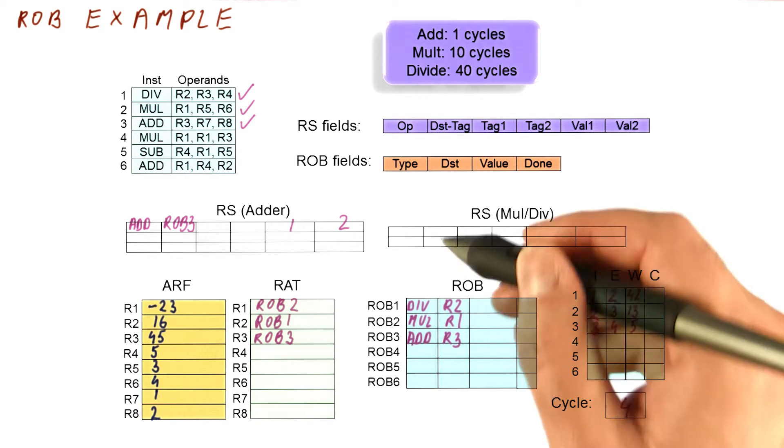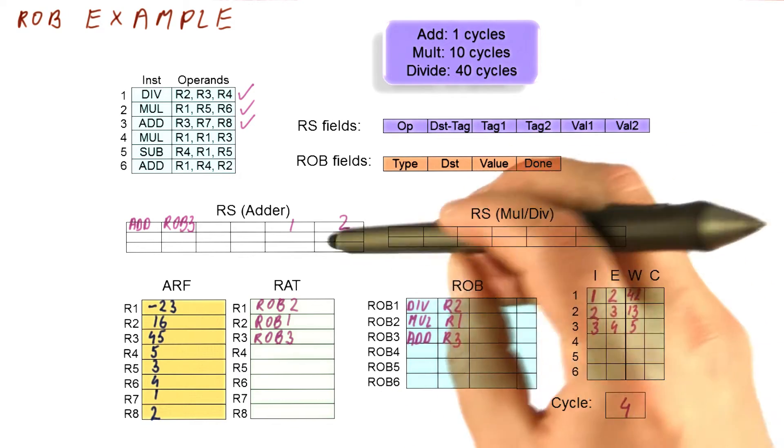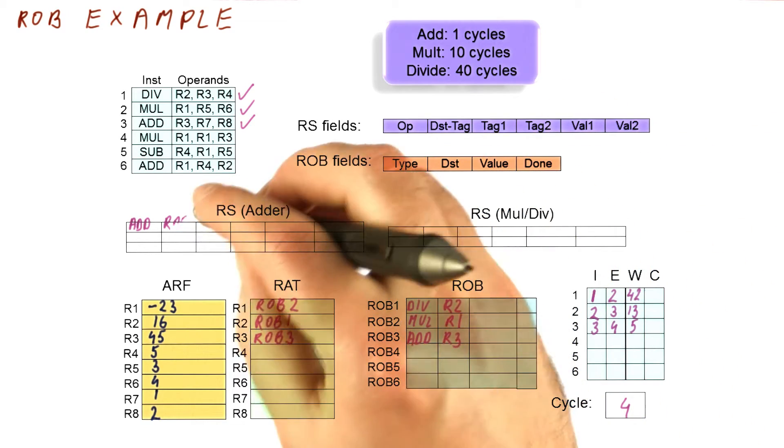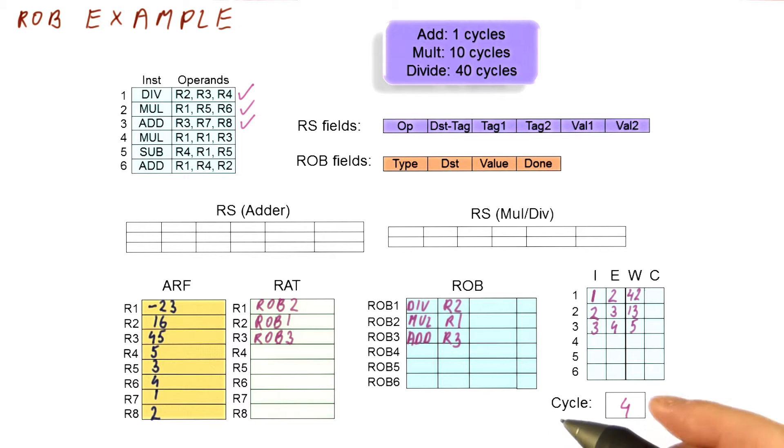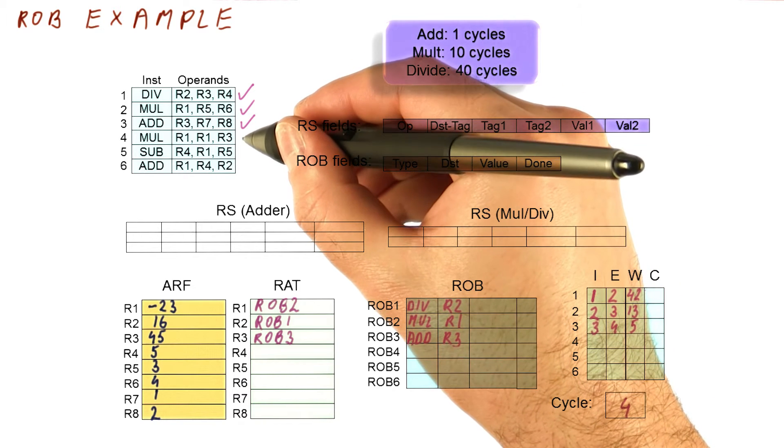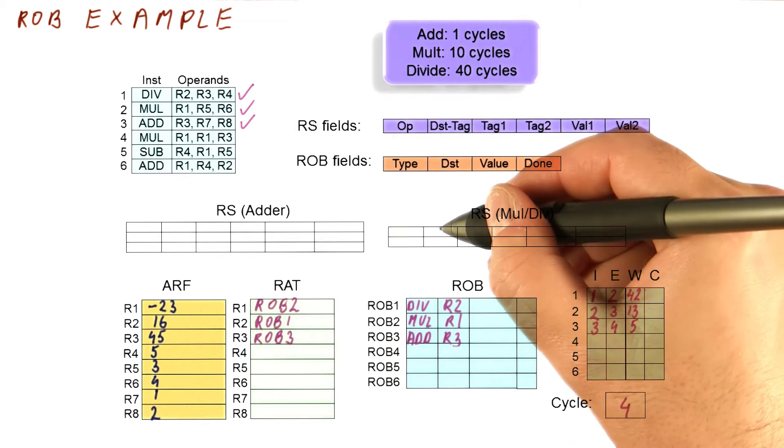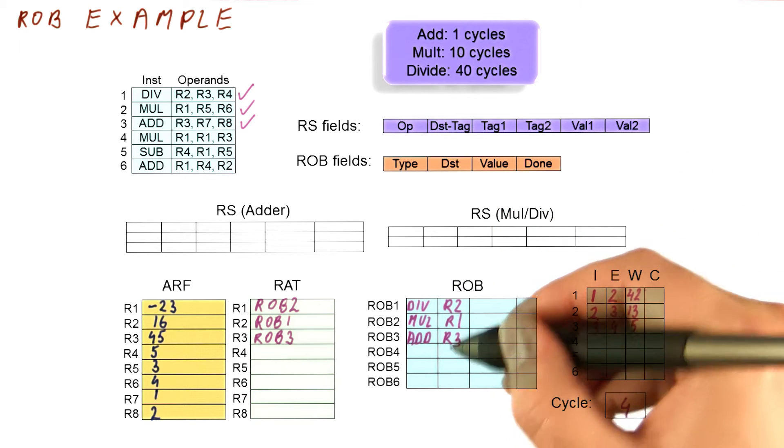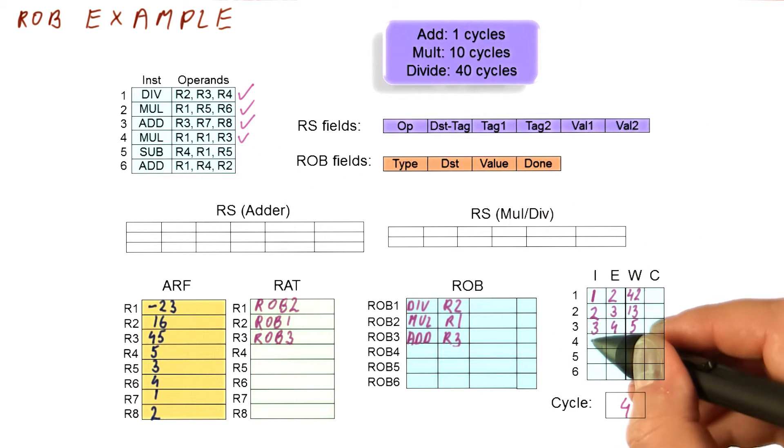In cycle four, the add begins execution, and at the beginning of cycle four, we already have this entry free, because we dispatched in the previous cycle. So now we're going to try to issue this instruction here. We have a free reservation station. We have free ROB entries. So it will be able to issue in cycle four.